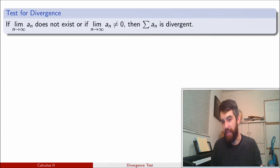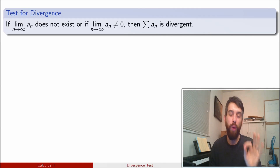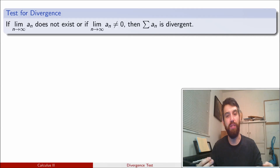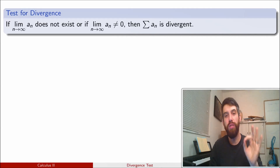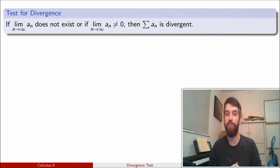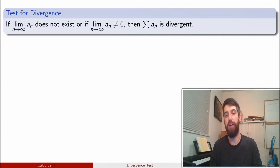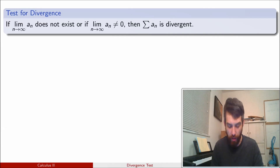The claim is this: at minimum, we must have that the individual terms — the a_n's, the terms that the series is built of — those must go to zero in the limit as n goes to infinity. If that is not the case, if you do not have the a_n's going to zero, then the series is going to diverge.